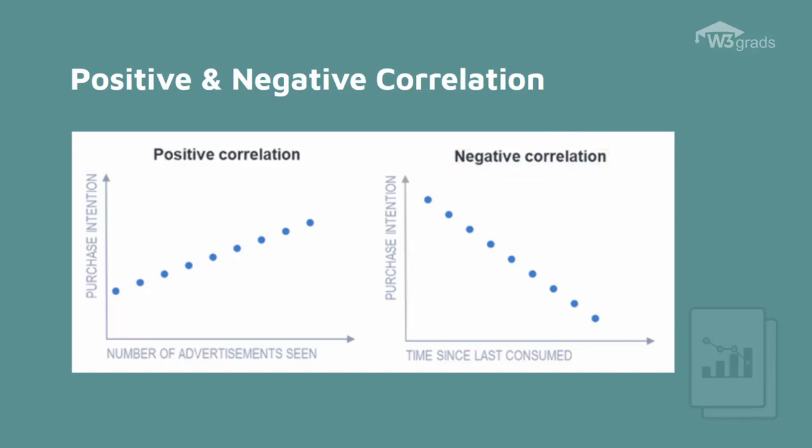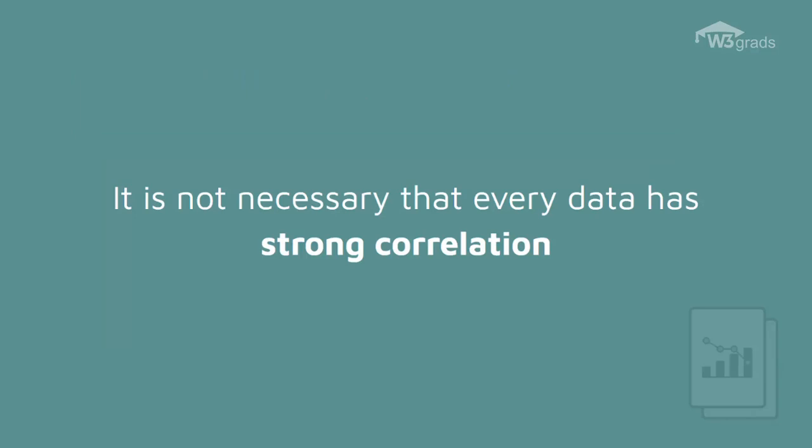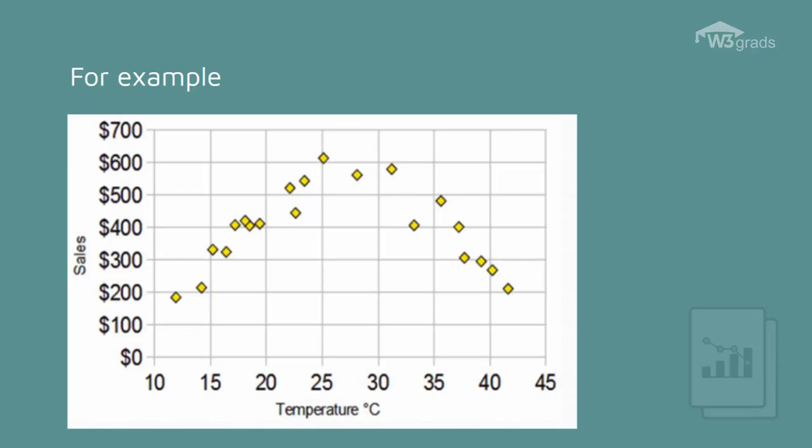But it is not necessary that all data will have strong correlation. For example, let us compare the sales of ice cream versus the temperature. As you can see from the graph, it could mean that if it is very hot outside, people might not want to leave their homes to go buy ice cream. In addition, there could be other reasons as well. Hence, due to other factors influencing the data, it is difficult to build a strong correlation between them.